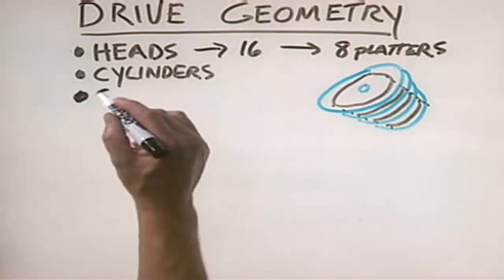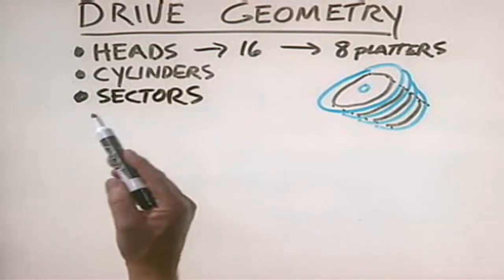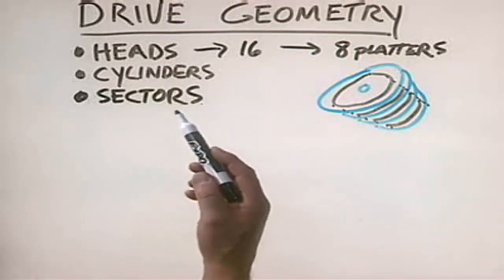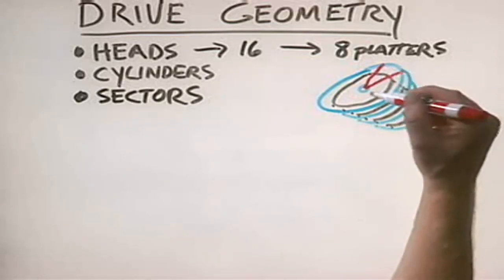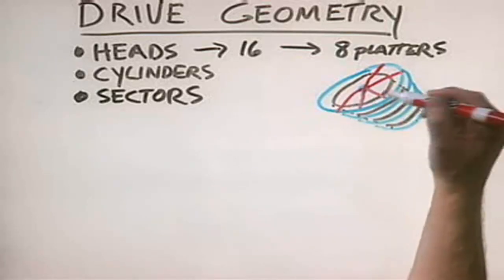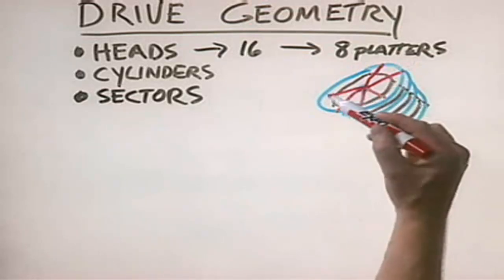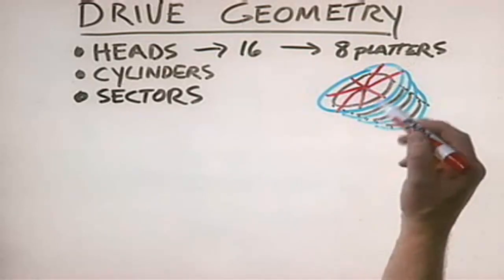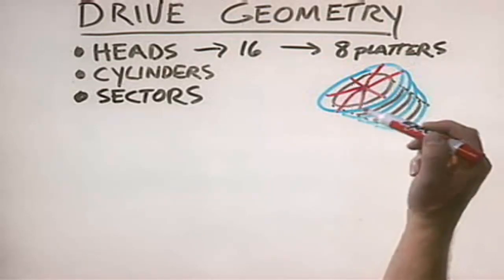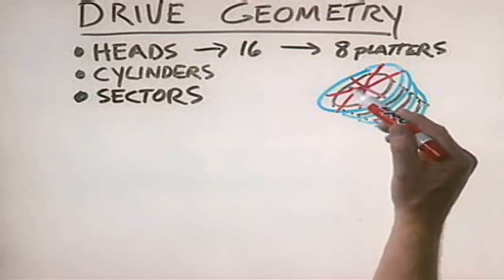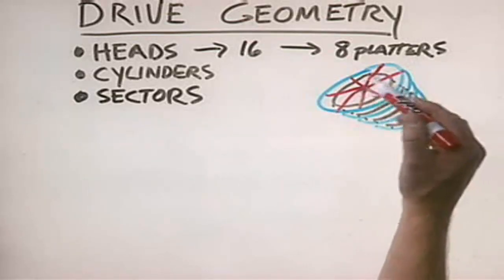We also need to be concerned with the number of sectors per track — usually just called sectors in the PC industry. We divide the hard disk up into pie-shaped wedges, the same way we do with a floppy disk drive, and the number of sectors per track is the number of sectors associated with any given track. For example, in this diagram the drive has seven sectors for every track.